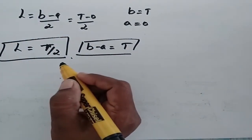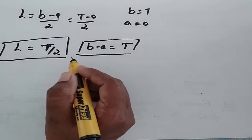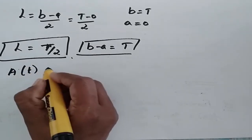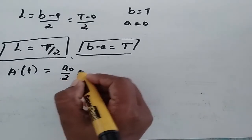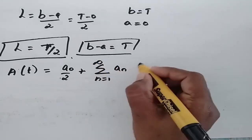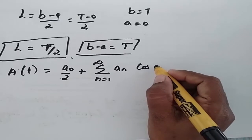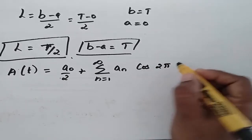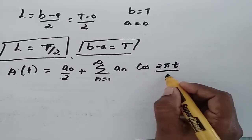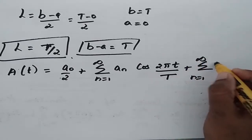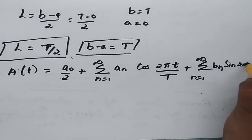So the Fourier series becomes a₀/2 plus summation from n = 1 to infinity of aₙ cos(nπx/l). Since l = T/2, nπx/l becomes 2πt/T, giving us the harmonic expansion in terms of the period T.